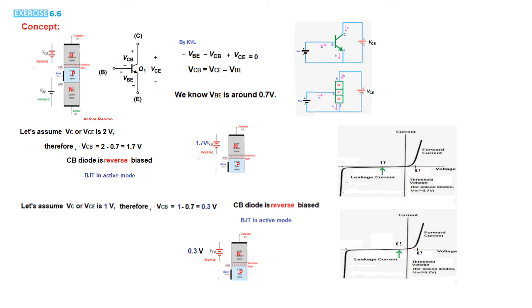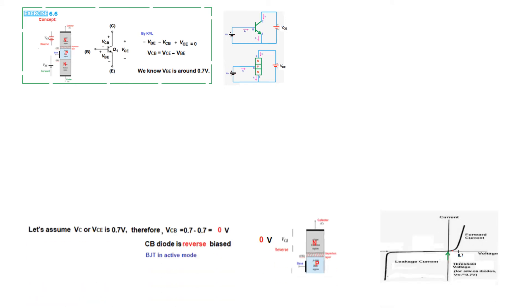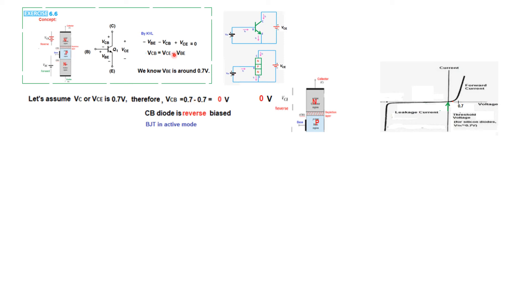A couple more steps. Now VCE is 0.7 volt. Then VCB equals 0.7 minus 0.7 equals 0 volt. We have 0 volt at this junction; on the diode curve we are at the origin. The CB diode is still considered reverse biased at 0 volt and the BJT is still in active mode.